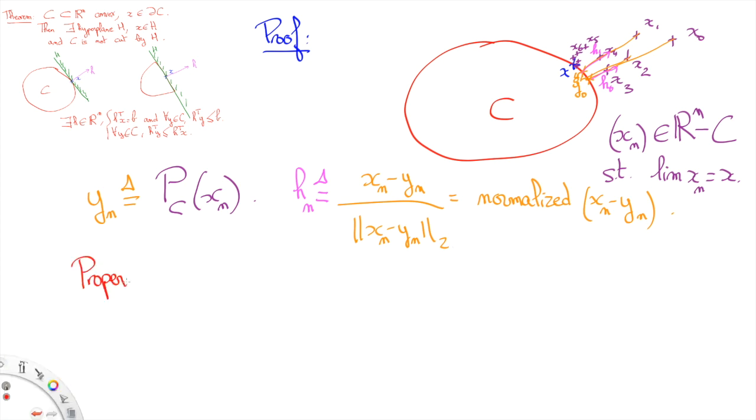The properties of the projection on a convex set tell us that Hn nicely separates the convex set C from xn, i.e. Hn transpose y is less than or equal to Hn transpose yn, which is strictly less than Hn transpose xn.